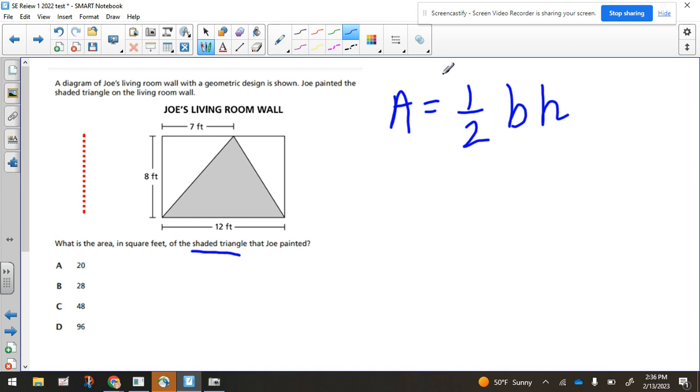This is a triangle. We need to use the formula A = 1/2 × base × height. Remember the base and the height have to be perpendicular to each other. If we use this as the base right here of 12, what's perpendicular to that? Well, this line right here they're telling you is 8. I'm just going to slide this over so you can see that that's actually the height of the triangle as well. So that matches up with 8. We're going to use 8 as the height.